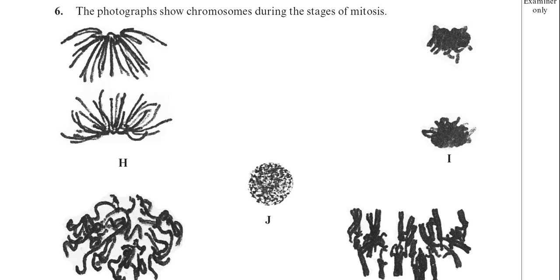This is the first question that they've used just chromosomes to represent the stages of mitosis. Normally they would actually put the outline of the cell in. I know that speaking to some students they found this a little bit problematic just to see the chromosomes seem to put some people off. Don't let that put you off.